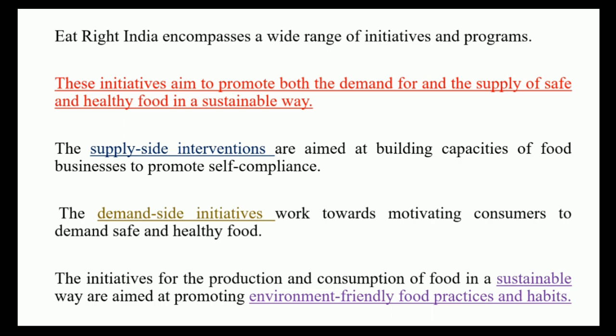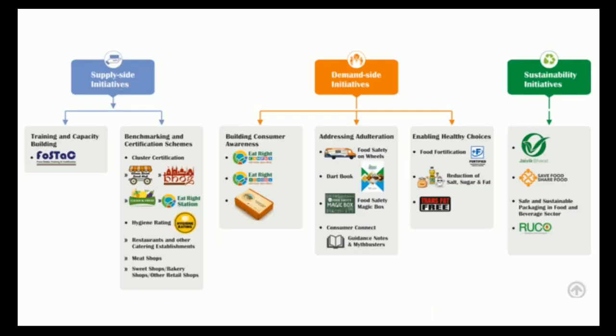Under supply side interventions, FSSAI has taken various steps to make food businesses capable of providing safe and nutritious food to citizens. On the demand side, FSSAI has taken different initiatives to make consumers and people aware of the food they are taking. Then we have sustainable interventions, where FSSAI has worked on building an ecosystem that promotes eco-friendly and environment-friendly food practices and habits. In the diagram, the main objective of supply side initiatives is to build the capacity of food businesses so they can provide safe food to consumers.